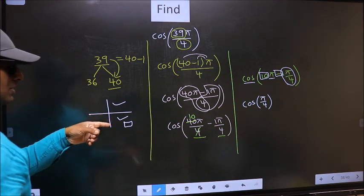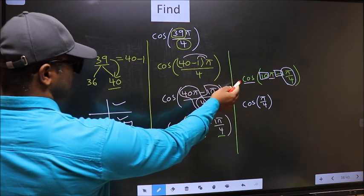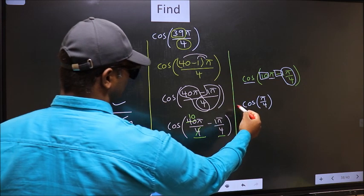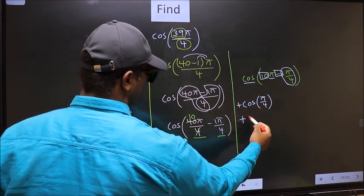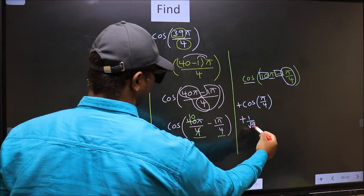And in the fourth quadrant, cos is positive. So we should put plus. So plus cos pi by 4 is 1 by root 2. This is our answer.